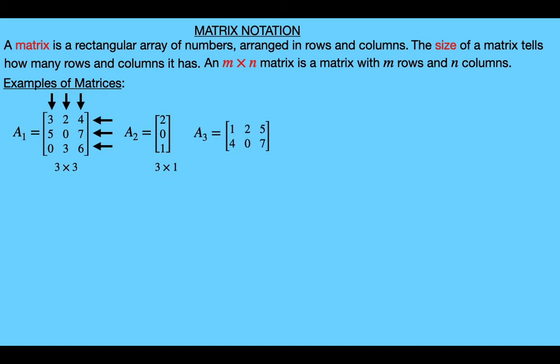Here's another example. In this one we have two rows and three columns, so this is a 2 by 3 matrix.